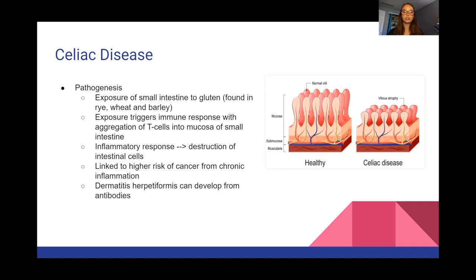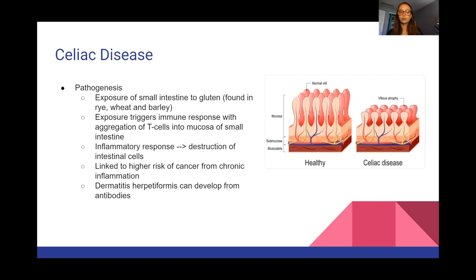Regarding pathogenesis: if you have celiac disease and are exposed to gluten in the small intestine, it triggers an immune response leading to aggregation of T cells into the mucosa of the small intestine. That immune response leads to destruction of intestinal cells. You can see atrophy of the villi, which reduces surface area available for nutrient absorption. This is linked to a high risk of cancer from chronic inflammation, and dermatitis herpetiformis can result from the antibodies.